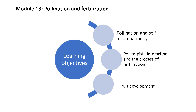The learning objectives of this module are to see how plants prevent inbreeding by exhibiting self-incompatibility, to understand the nature of pollen-pistil interactions through the stigma, style and ovule to bring about fertilization of the male and female gametes, and finally, we will see how the fruit develops after fertilization is carried out.